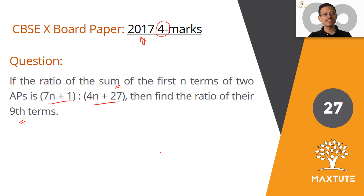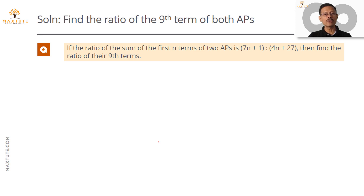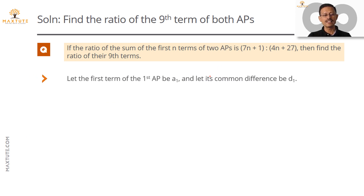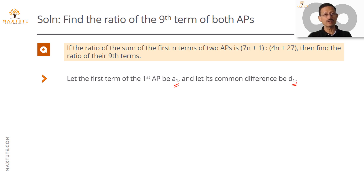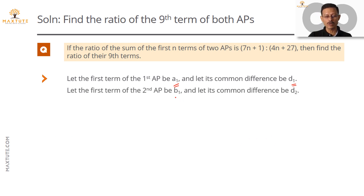We'll assign some variables, quickly recall core formulae, and then solve this question. For the first AP, let the first term be A1 and the common difference be D1. For the second AP, let the first term be B1 and the common difference be D2.